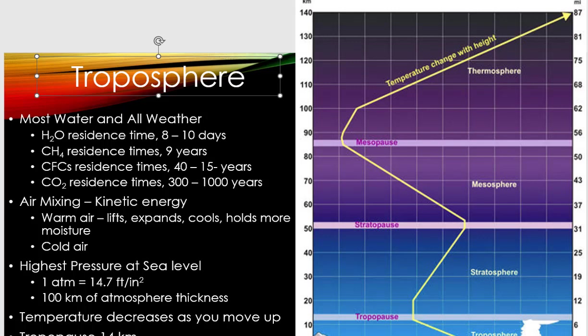Water has a residence time of eight to ten days — you see evaporation, it condenses, and within about a week that water will rain back down and become part of the water cycle. Methane (CH₄) has a longer residence time of about nine years. CFCs — chlorofluorocarbons, which are harmful to the ozone layer — have residence times of 40 to 150 years. CFCs are not natural; they're produced by humans for air conditioning and other refrigerants. Then carbon dioxide, which is natural, has the longest residence time.